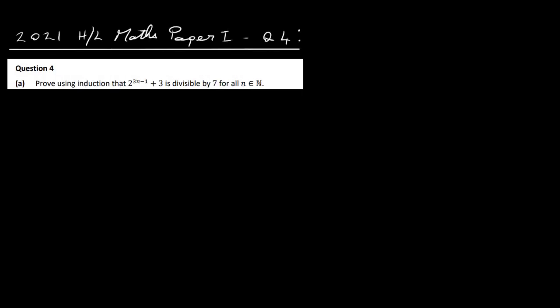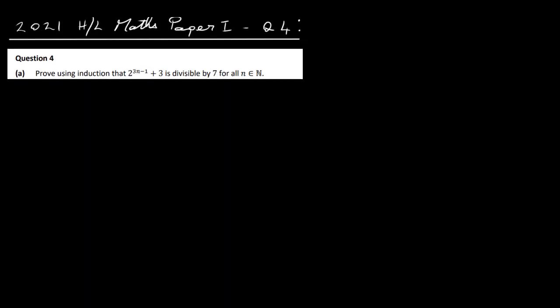Let's have a look at the 2021 Higher Level Maths Paper 1, Question 4. Part A is a proof by induction — it's a divisibility proof. We've got to prove by induction that 2 to the power of 3n minus 1 plus 3 is divisible by 7.